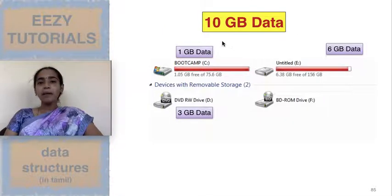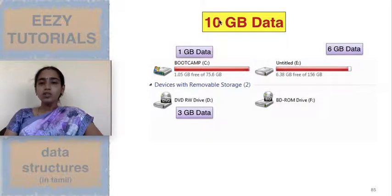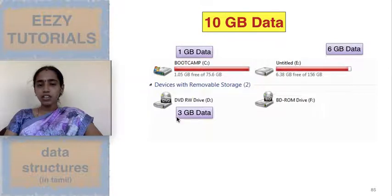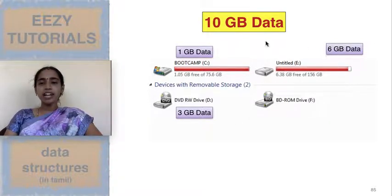Let us see a real-time example. I have a drive with only 1 GB in C, 6 GB in E, and remaining space in a hard disk or secondary storage. Now I need to store 10 GB of data — I cannot store it directly in any single drive. So I split the 10 GB into 1 GB, 6 GB, and 3 GB and store them separately. At this point I need a link for connecting the first part, second part, and third part of the data.